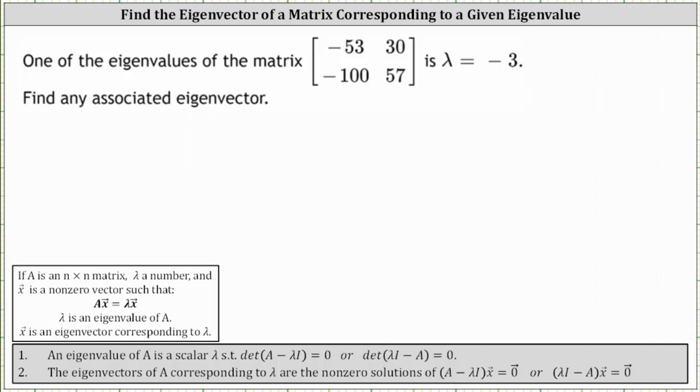The eigenvectors of a matrix corresponding to lambda are the non-zero solutions to the equation where we have the difference of matrix A and the product of lambda in the identity matrix times vector x equals the zero vector, where x is an eigenvector.